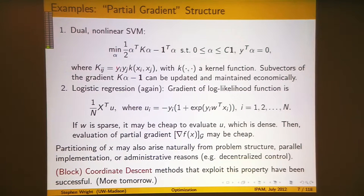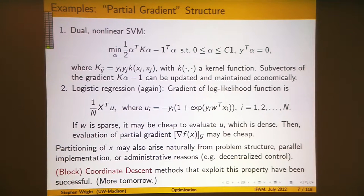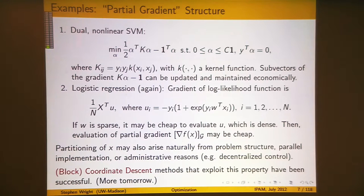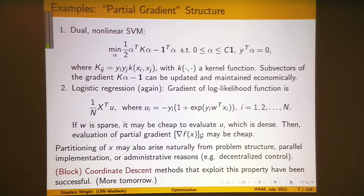Here are examples of partial gradient structure. For kernel SVMs, you implicitly project features into higher-dimensional space before classification, ending up with a quadratic program in dual space. You can calculate a piece of the gradient much more cheaply than the full gradient, since the kernel function can be expensive to evaluate. Many SVM methods compute just two or ten elements of the gradient by evaluating two rows of the kernel matrix. Similar partial gradient savings occur in logistic regression.